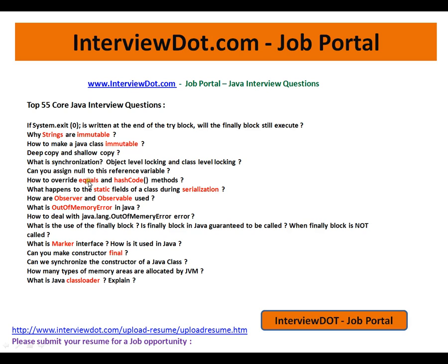What is the importance of overriding equals and hashCode? If you don't override properly, you might get duplicate objects in your collection. There might be questions like: if I override equals and don't override hashCode, what happens? If I override hashCode and don't override equals, what happens? What happens to static fields in a serialization process? What is the Observer/Observable pattern? What is an out-of-memory error? What is a class loader? What is a marker interface? What are the different memory areas in the JVM — internally you should know what the heap and stack are and what their purposes are.